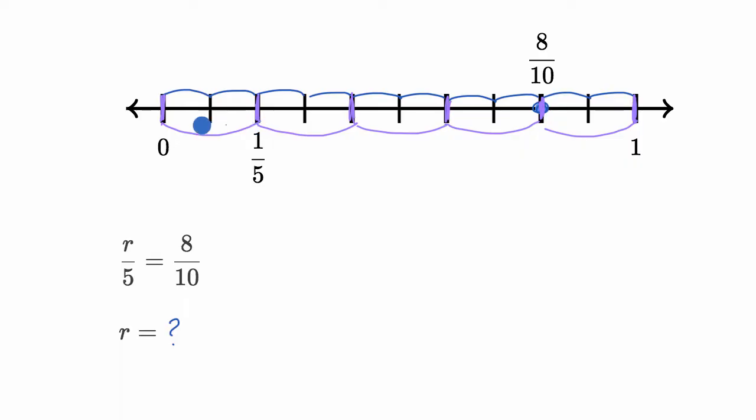And so it makes sense that our first jump right over here gets us to one fifth. And you can see that that is equivalent to two of the tenths. One fifth is equal to two tenths. But how many fifths is equal to eight tenths? Pause this video and try to figure it out.